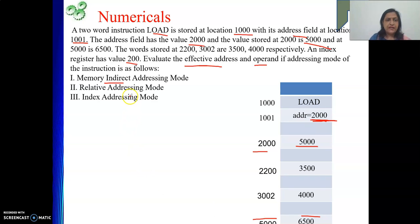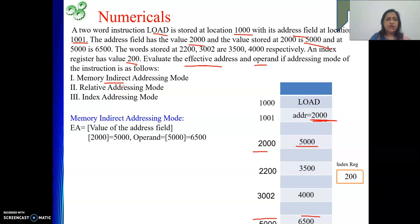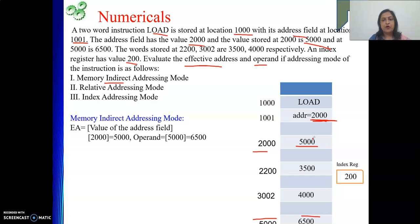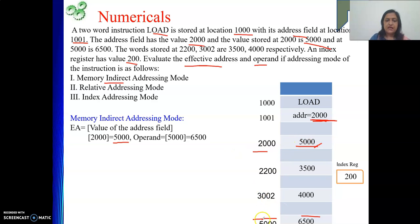Now let's calculate. For memory indirect addressing mode, EA equals the content of the memory location whose value is in the address field. The address field value is 2000, and the content of 2000 is 5000. So 5000 is the address of my operand, meaning the effective address is 5000. The operand is the content of 5000, which is 6500.